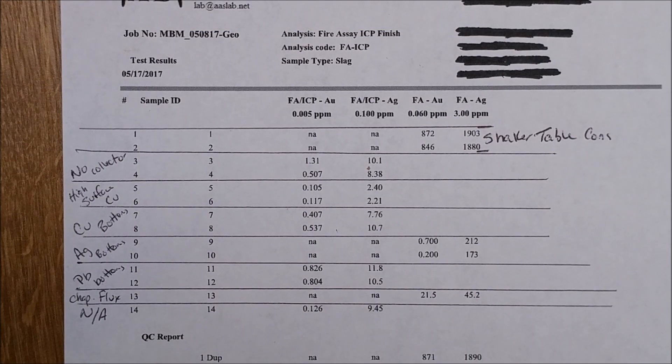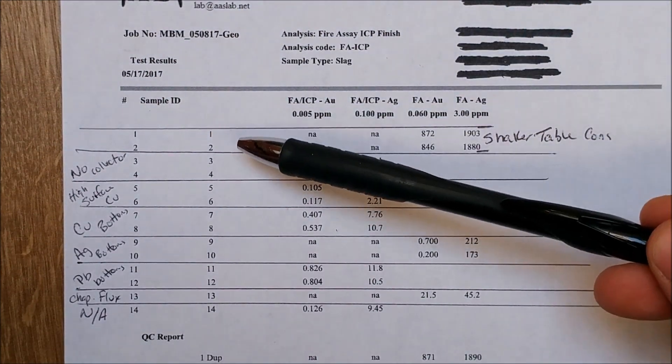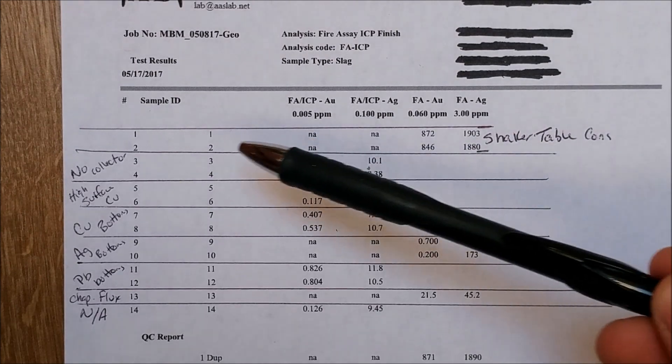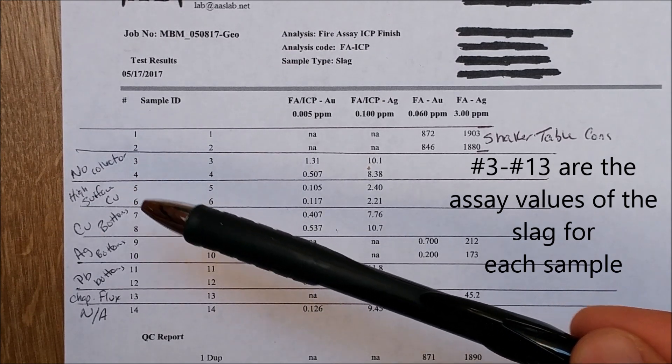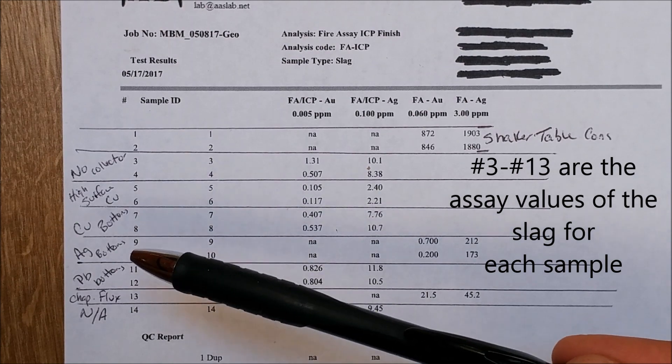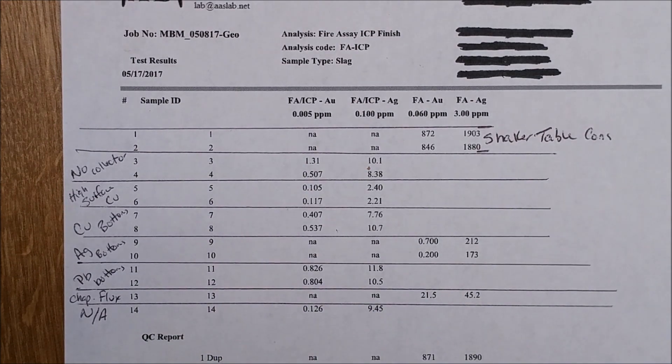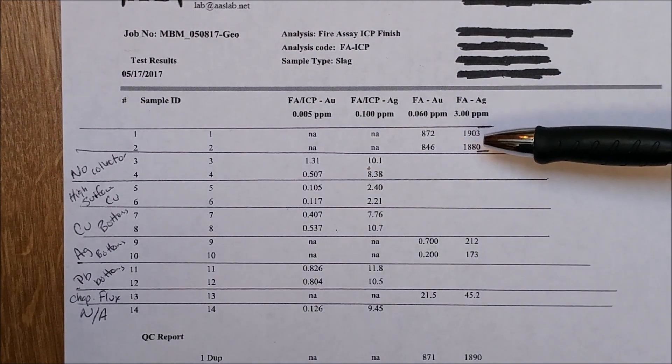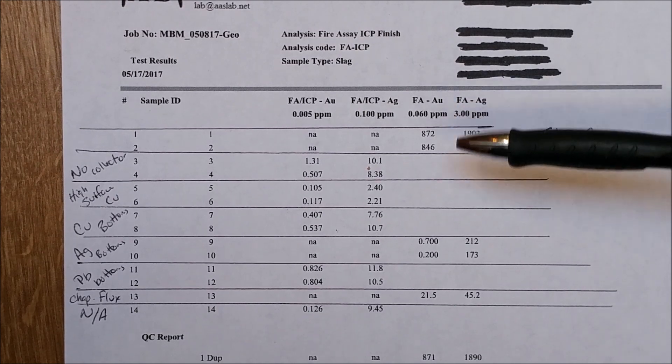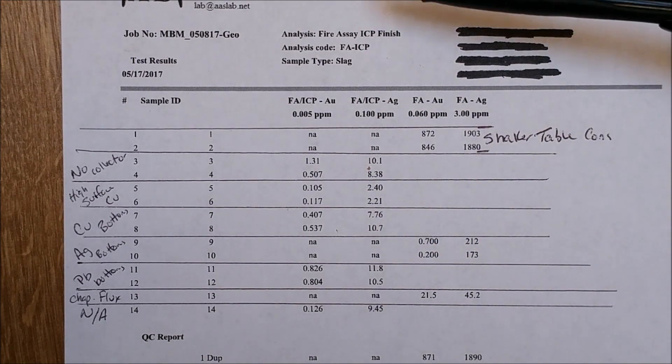Okay, so here are the assay results. I wanted to show them to you guys so you can check my math and give you all the data here. These are the sample IDs down this side here. The first number one and number two are the shaker table cons, that's right off the shaker table. That's the stuff that we were smelting. Number three and four, no collector. Five and six, high surface area copper. Seven and eight were the copper bottoms, silver bottoms, lead bottoms, the Chapman flux, and the number 14 is applicable to this experiment. And so they did two things: they did a fire assay here for gold and silver, and if the value that they came up with was less than was detectable by the fire assay, they came over and they did an ICP finish.